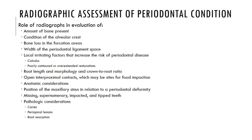The radiographic assessment of periodontal conditions is the focus of this lecture. The role of radiographs in evaluation of periodontal conditions would be primarily to see the amount of bone present, the condition of the alveolar crest, bone loss in the furcation areas, width of the periodontal ligament space, and local irritating factors that can increase the risk of periodontal disease — for example, calculus which could be visible on the radiograph, and poorly contoured or overextended restorations, as well as root length and morphology and crown-to-root ratio.